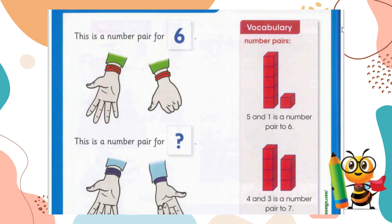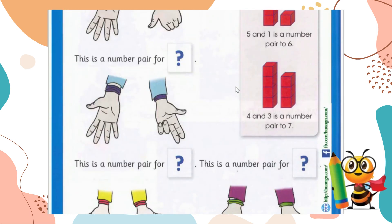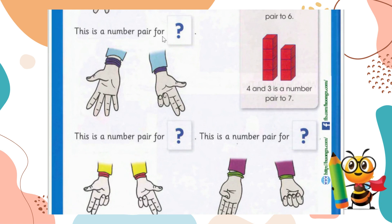Now let's move to the next example — a number pair for eight. We need to count the fingers again. One, two, three, four, five — one hand has five fingers. Then we count the other hand: one, two, three. So we have five and three. Now we need to find what total number five fingers and three fingers make, so we count collectively.